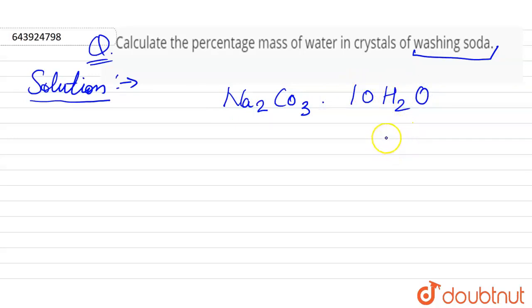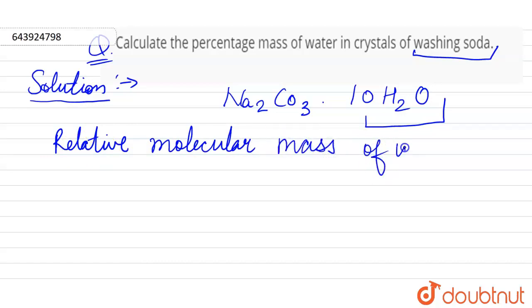So we have to find the molecular mass for water. Now first we have to find the relative molecular mass of washing soda crystals.